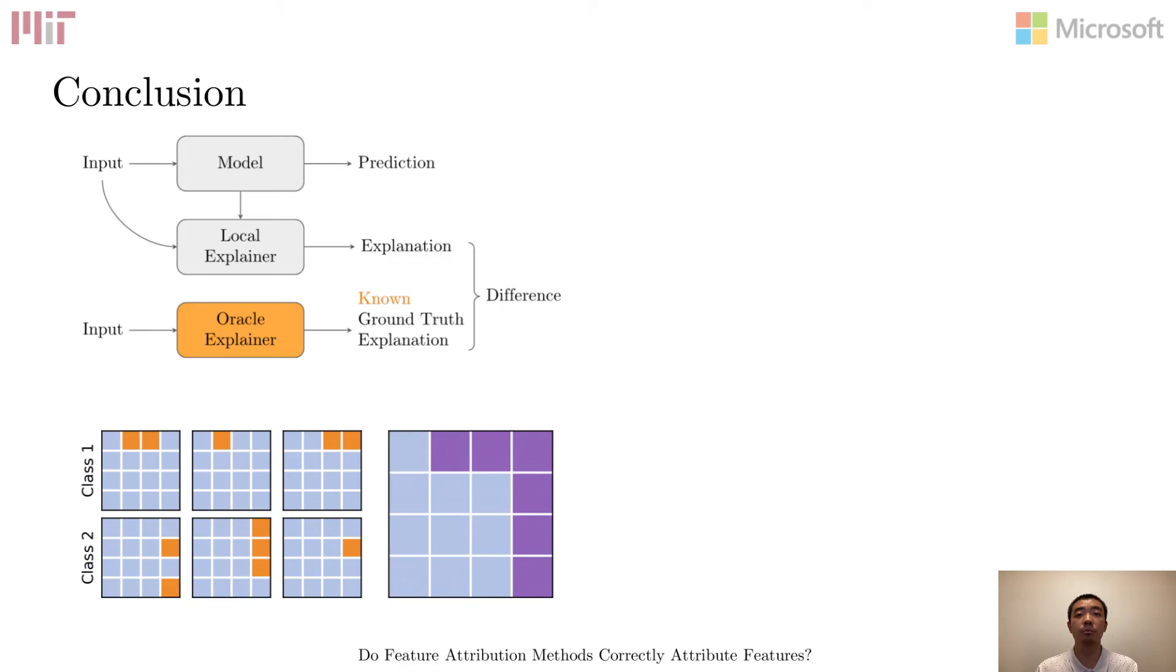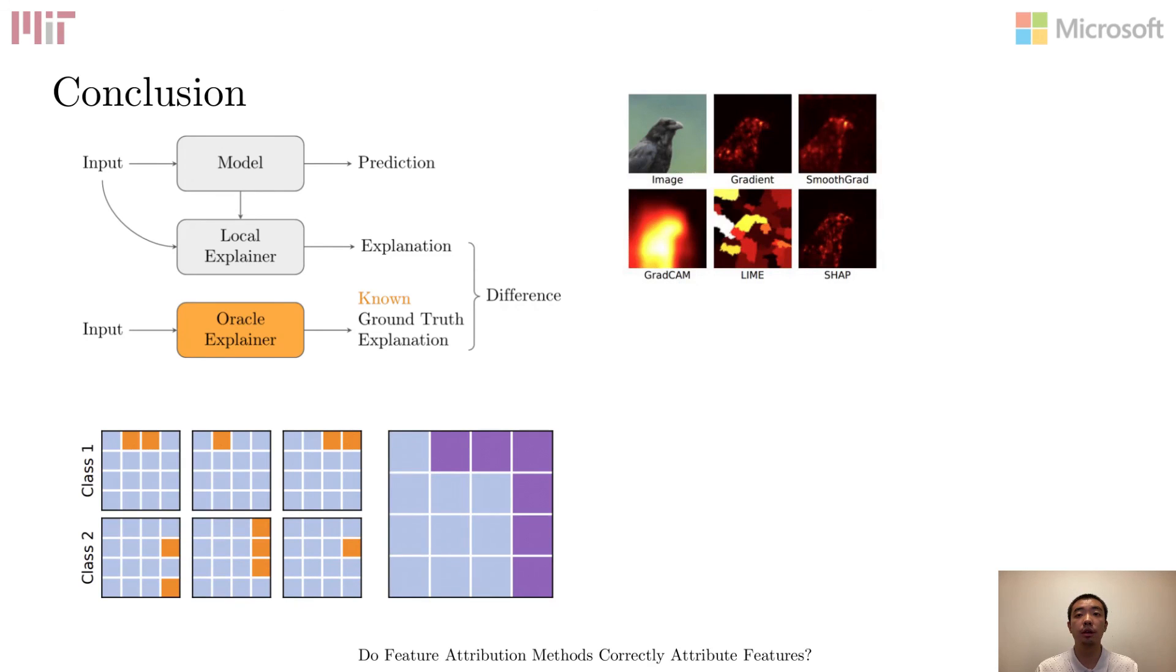To conclude, this work proposes an objective and automated evaluation procedure of feature attribution methods using a dataset modification procedure to avoid pitfalls of previous approaches that arise due to the lack of feature ground truth. We evaluated three problem domains. For image models, we found that the reliability varies widely across explainers and feature types.